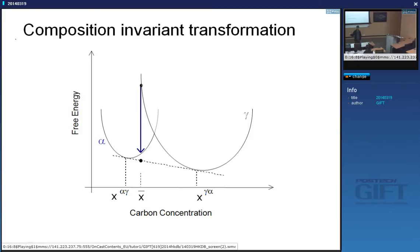Whether diffusion happens or displacements happen below T0 depends on timescales. If there isn't enough time for diffusion, you will get displacive transformation. Generally speaking for all steels, diffusion becomes difficult below 600 degrees centigrade — not diffusion of carbon, but of iron atoms.